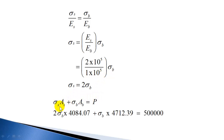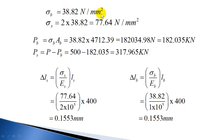The second relation is that the total load is shared by steel and brass: σ_S × A_S + σ_B × A_B = 500,000 N. Substituting σ_S = 2σ_B and the areas of steel and brass, you get σ_B = 38.82 N/mm². That is the stress induced in brass. The stress induced in steel is twice that: σ_S = 77.64 N/mm². So 1 mm² of brass carries 38.82 N, whereas 1 mm² of steel carries 77.64 N. The load taken by brass is σ_B × A_B = 38.82 × 4712.39 = 182,000 N approximately.